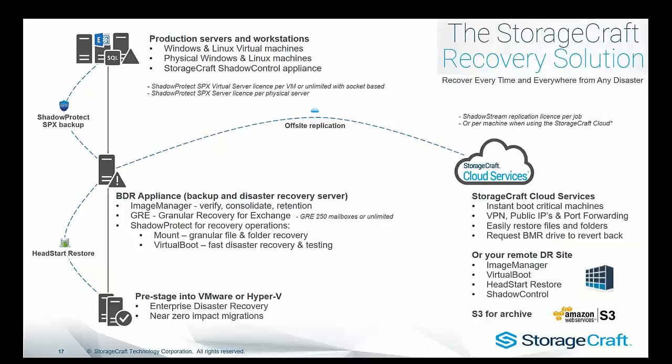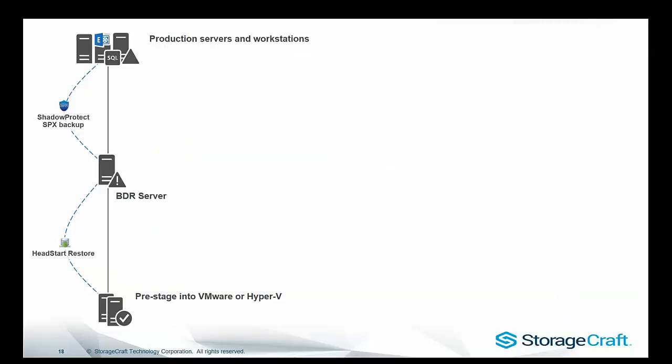In terms of licensing, all you need is to license the Shadow Protect software — for the original virtual machines we can do socket-based, monthly subscription, or perpetual licensing for physical and virtual machines. Image Manager, virtual boot, and Head Start Restore are all included. Off-site replication to your own DR site is included as well. The Storagecraft Cloud is an add-on service, and S3 is an included connector, but you would have to pay for S3 storage — which is around 25 Australian dollars a terabyte, so very affordable for long-term archival.